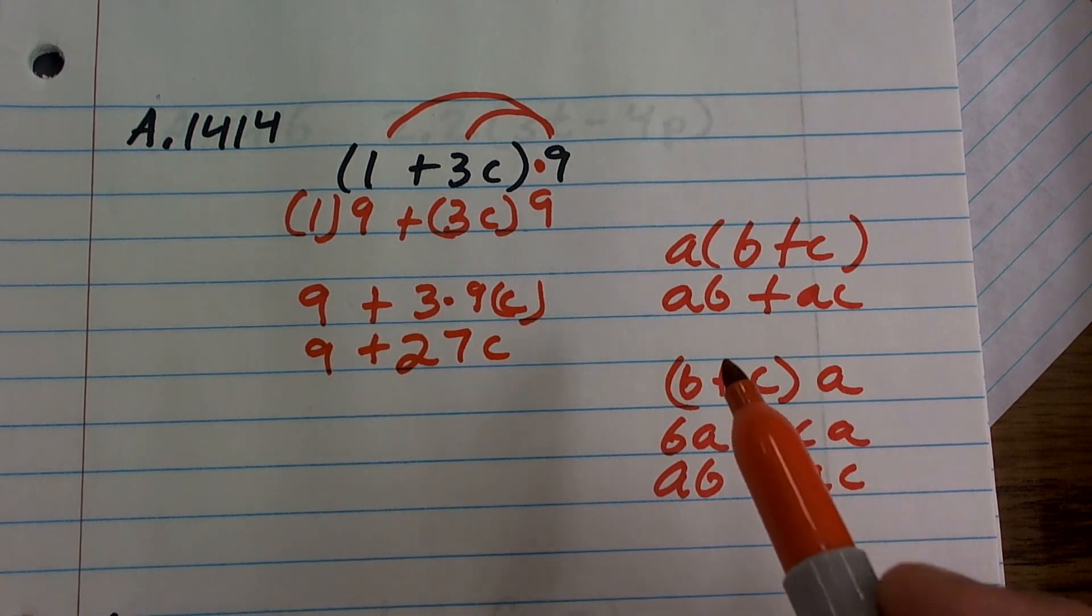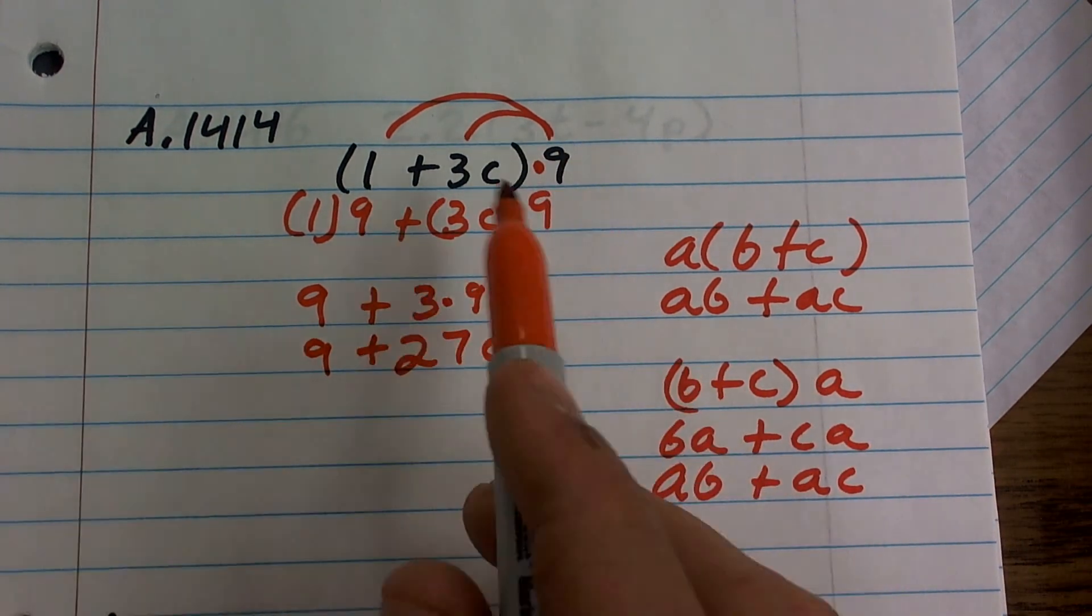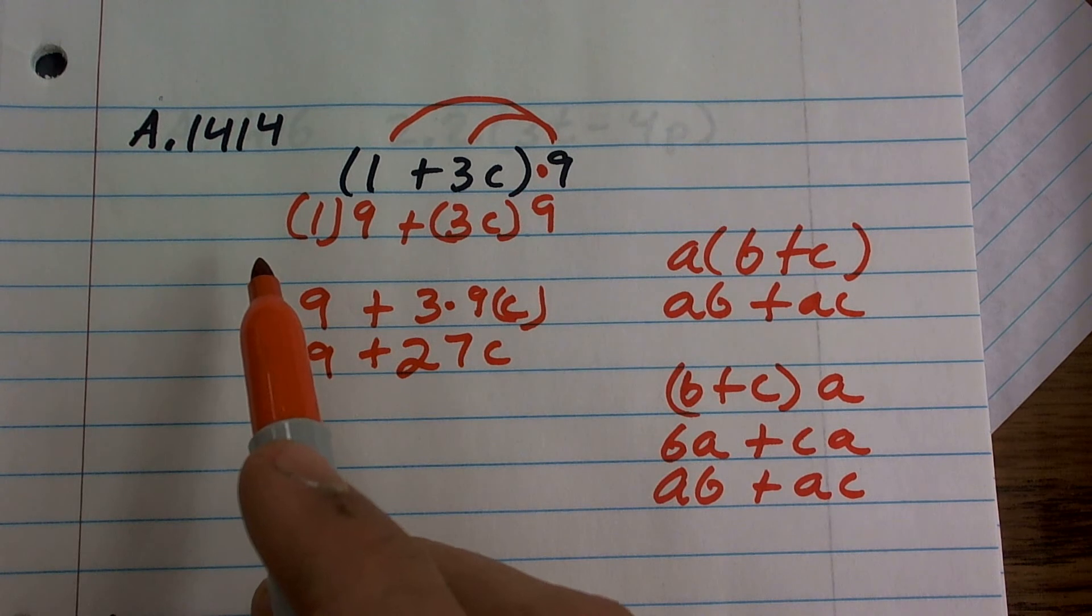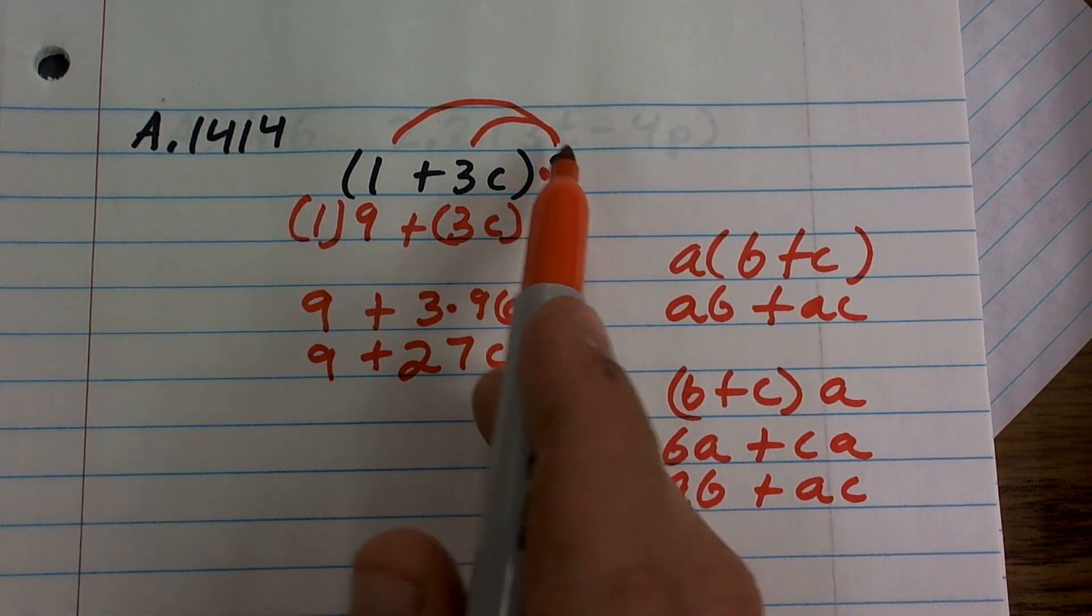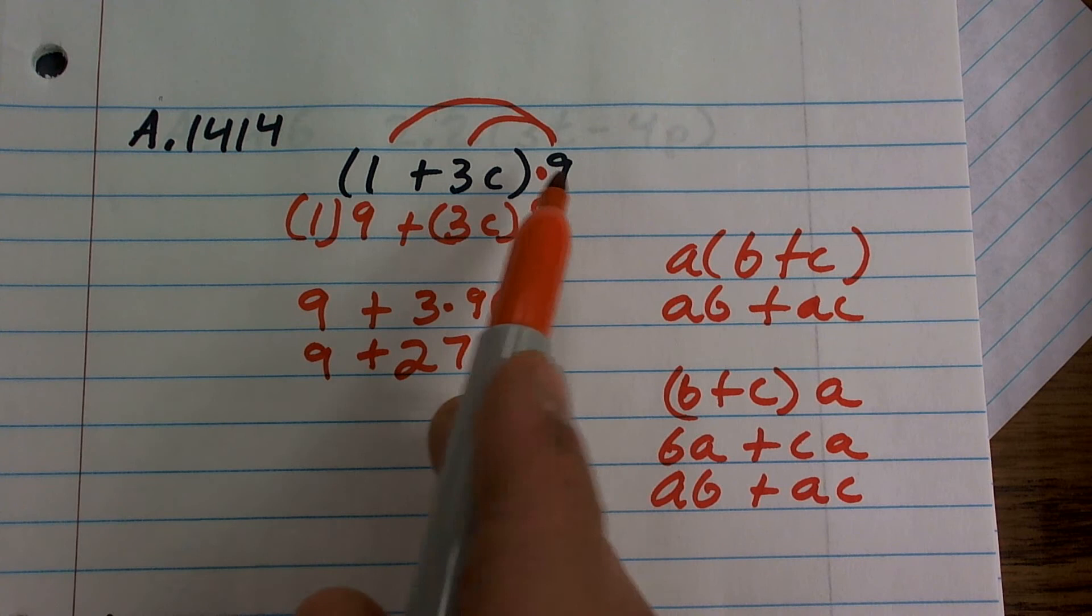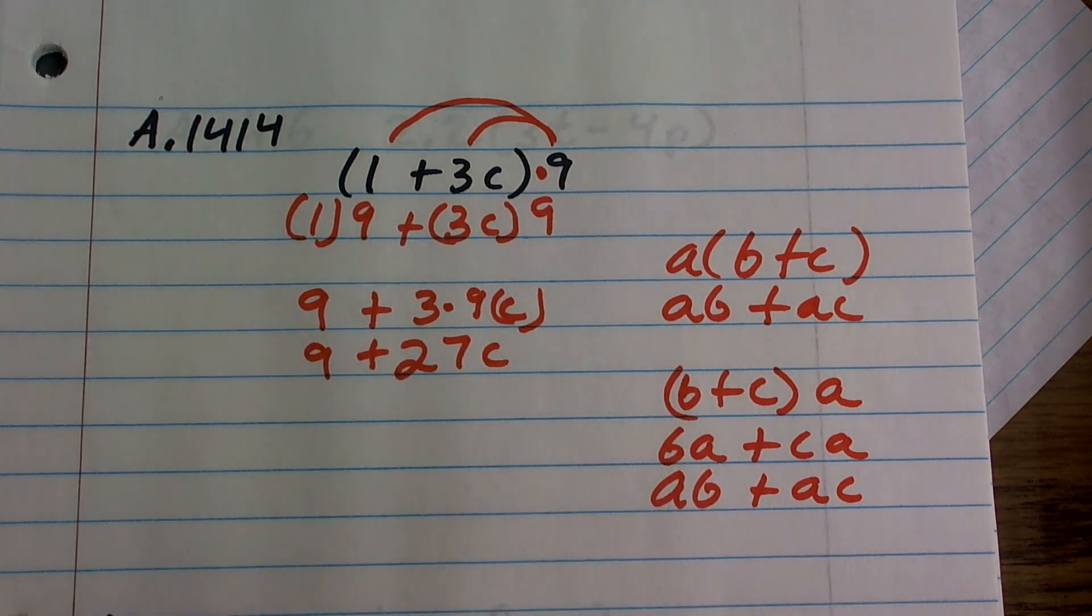So therefore, that's going to be your final answer. So it doesn't matter where your number lies when applying the distributive property. You just need to make sure that you distribute it by using multiplication to all of the terms inside of there.